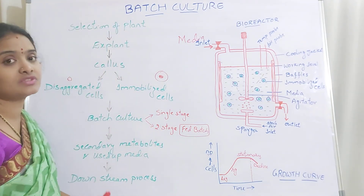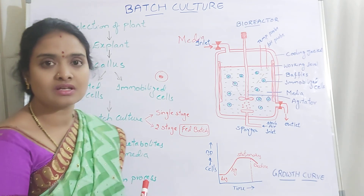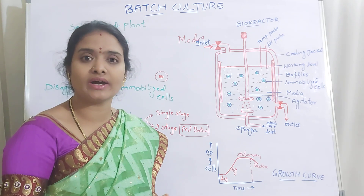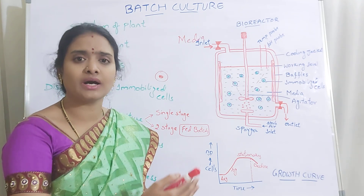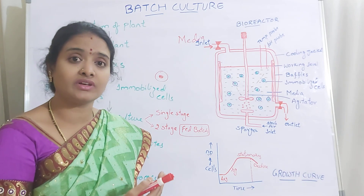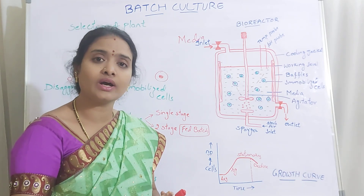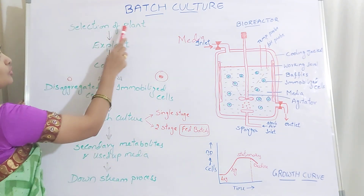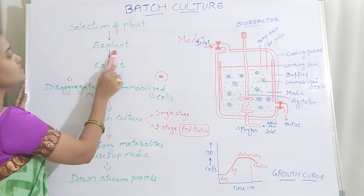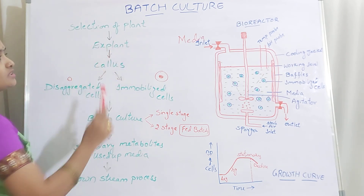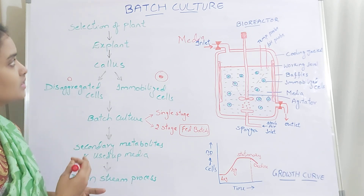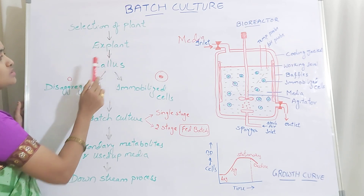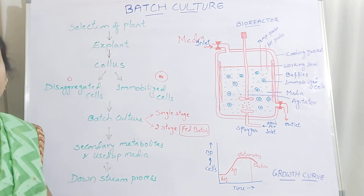First, you are going to select a plant which has medicinal importance. For example, if you take eucalyptus, you require the leaves. If you have some other medicinal plant which has medicinal activity in its roots, then you have to select the roots of that particular plant. So first it is the selection of the medicinally important plant, and then select the explant — whether it is a shoot or the root — which is producing the required secondary metabolite. Then from that, by means of plant tissue culture, you are going to produce a callus.